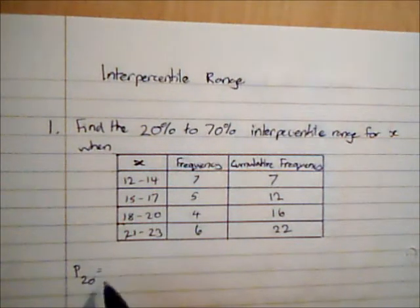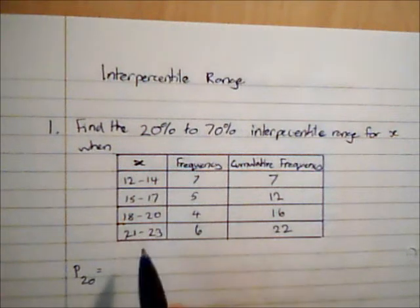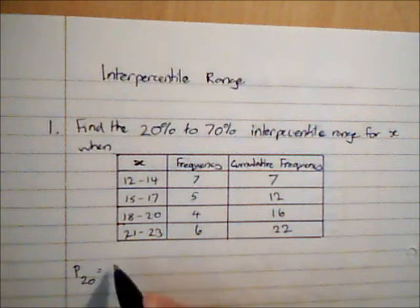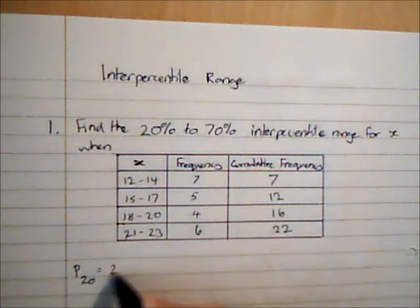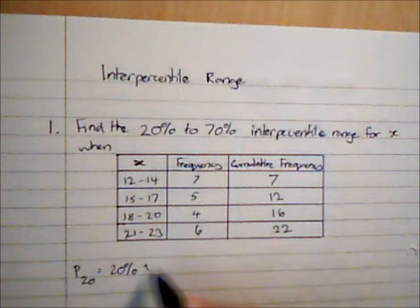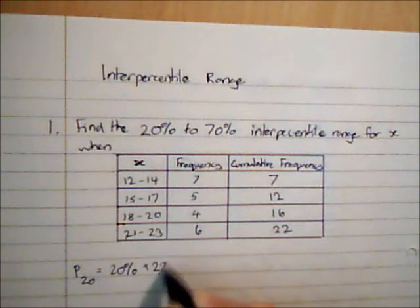First of all, I am going to have to find an estimate for how far through the data it is. So it is 20%, so I am going to do 20% multiplied by my total frequency, which is 22.